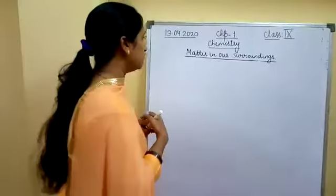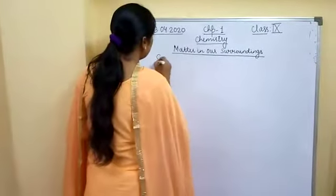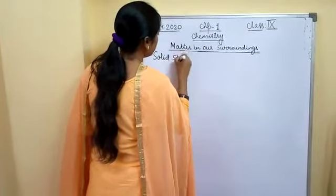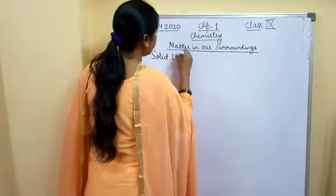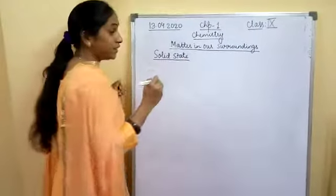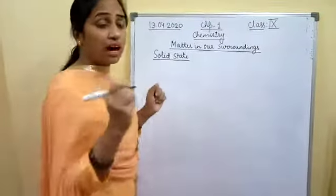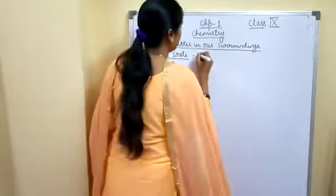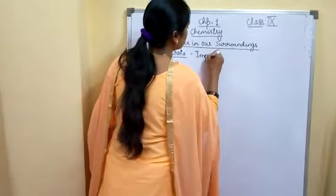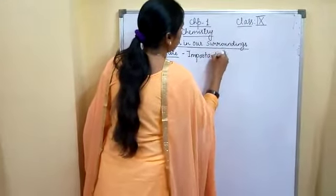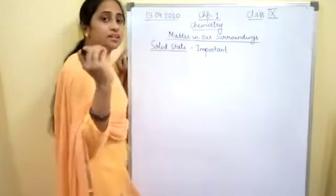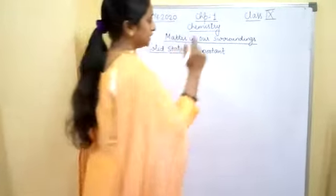Now we will be learning about the solid state. There are three states: solid, liquid, and gas. Out of these, we are studying about the solid state and what are the important characteristics of the solid state. Students, you have to learn these characteristics, as reasoning-type questions will be asked in the exam.